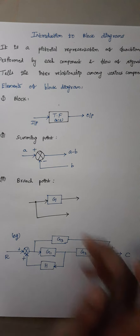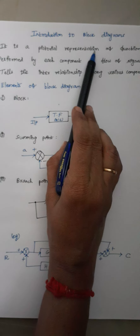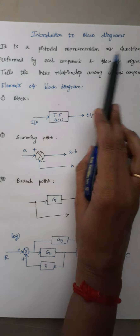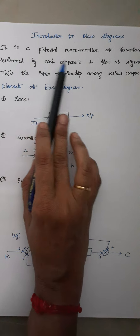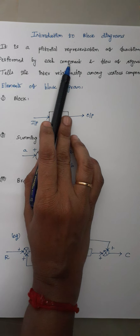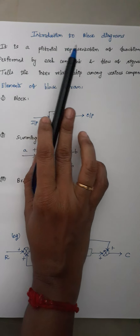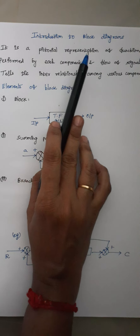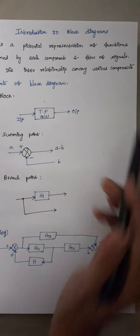A block diagram is nothing but a pictorial representation — that is, a representation in the form of figures or pictures of functions performed by each component. Whenever we consider a system, a system will consist of some components. A single component won't perform the entire function, as we all know. So it is a pictorial or diagrammatic representation of functions performed by each component present in that system. And flow of signals.